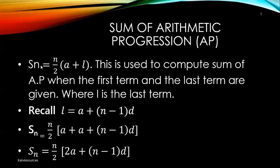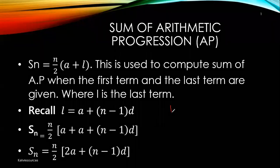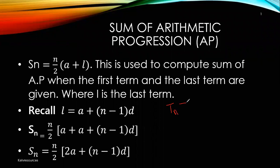So the first formula is: the sum of AP is equal to N over 2 times (A plus L), where A is the first term, L is the last term of that sequence, and N is the number of terms in that sequence. Remember, L here means the last term. The last term of any term of an AP is: A plus (N minus 1) times D.